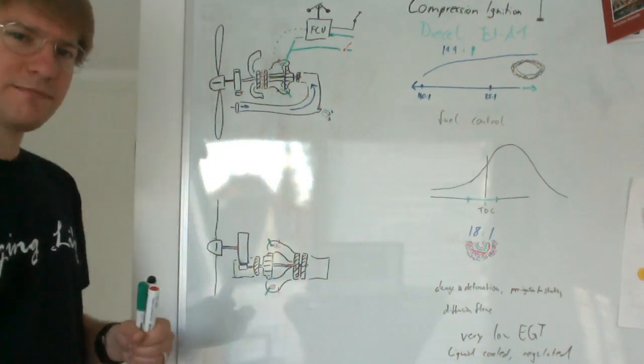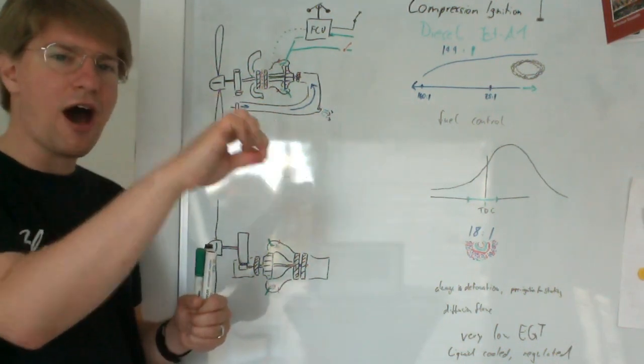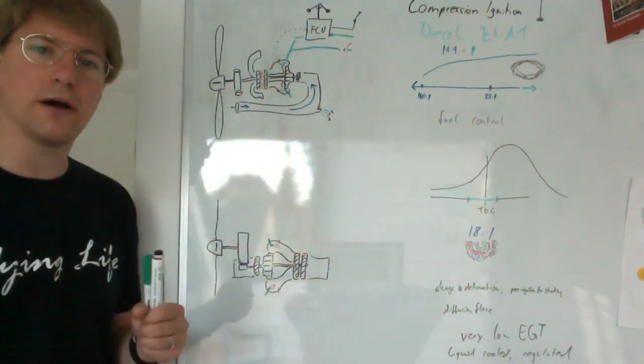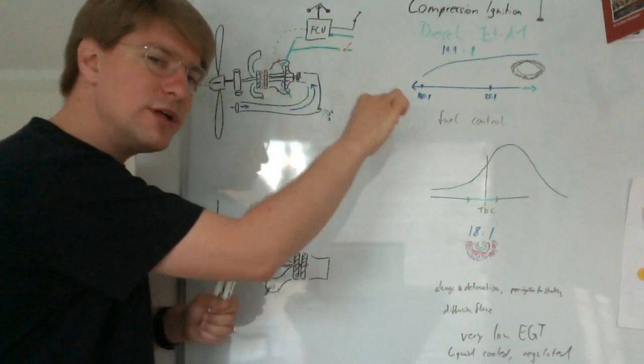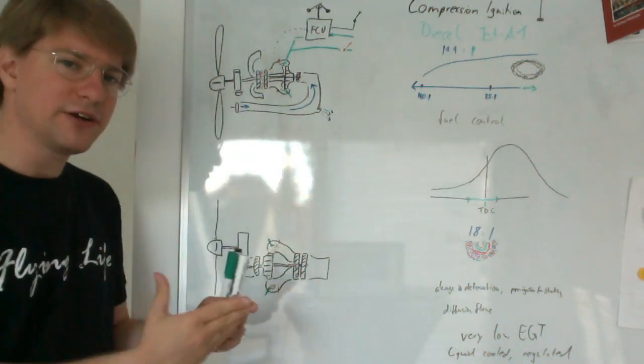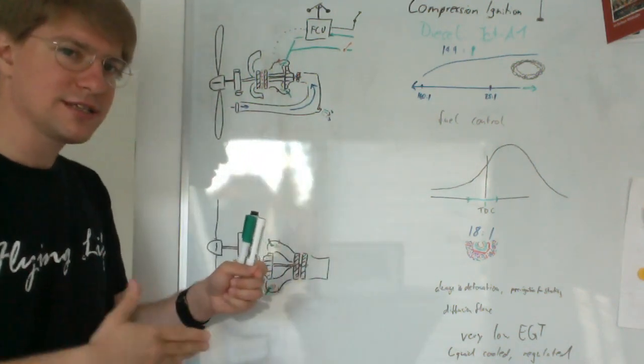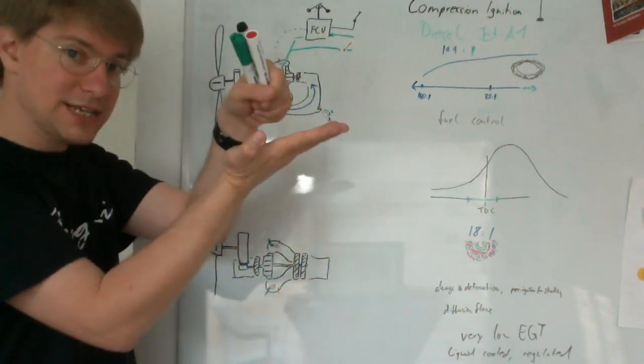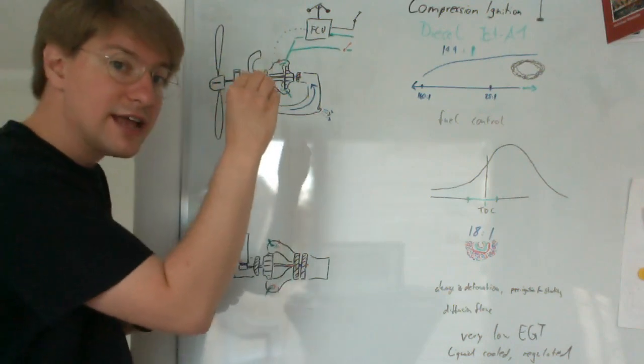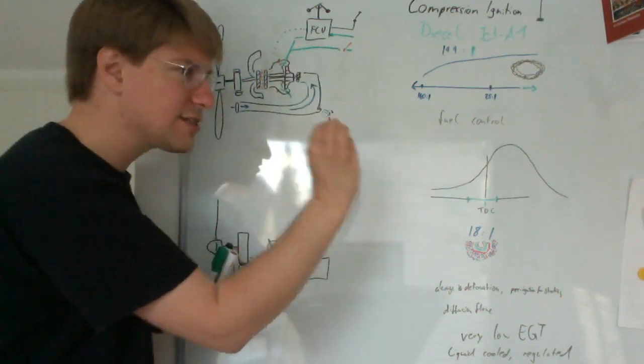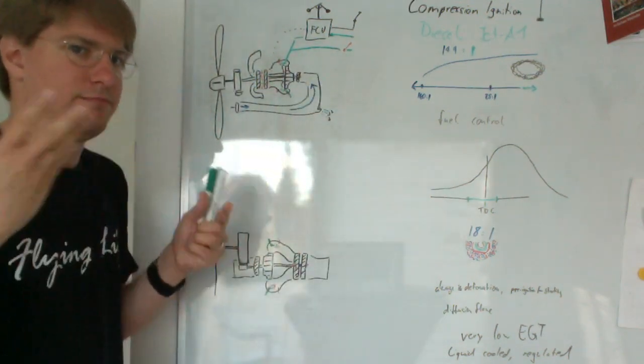When you start up a diesel engine, what you do is you create that hot spot in the cylinder on purpose by means of a glow plug. Once you have that hot spot in the cylinder, you can start the process of compressing the air, injecting the fuel, and the process starts at the glow plug: pre-ignition.